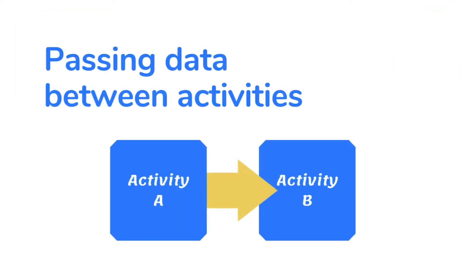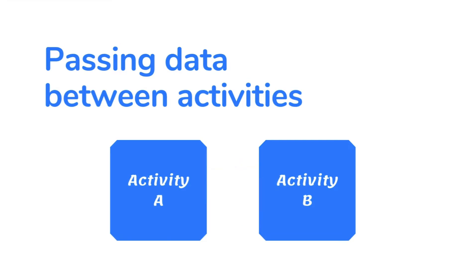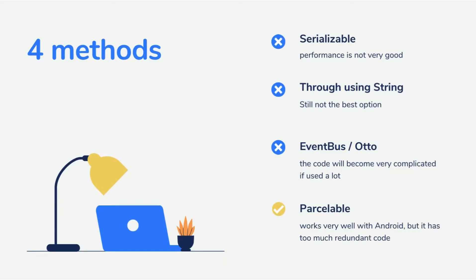Passing data between activities in Android is a familiar thing, and people use it a lot. With primitive data types, you can do it right through the bundle. For objects, we have four methods: serializable, through using string, event bus, auto, and parcelable.